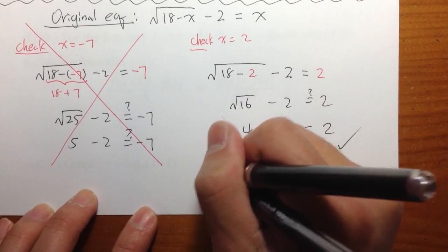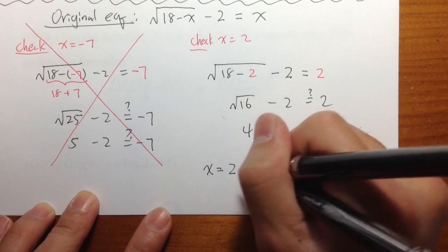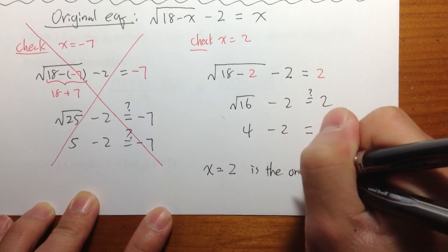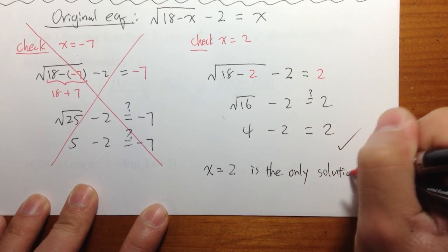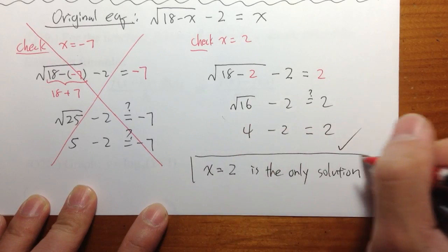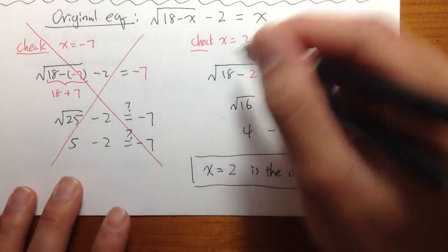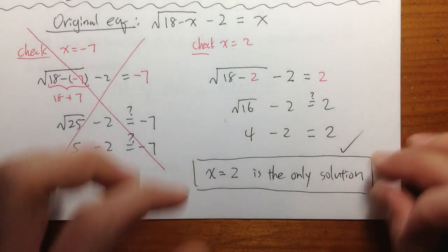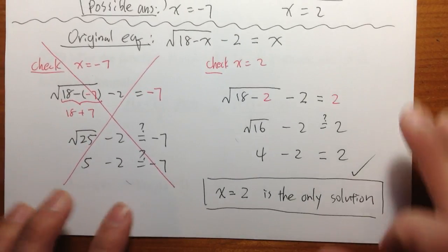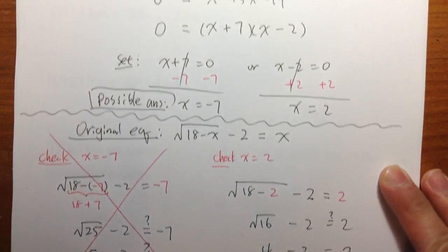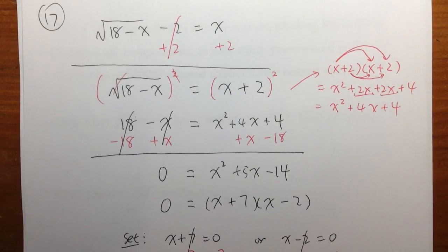When you write down your answer, indicate that x equals 2 is the only answer or the only solution to the equation. You can simply box x equals 2 and get rid of the negative 7, but I would like to write it down specifically.